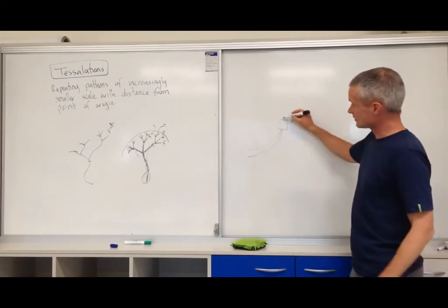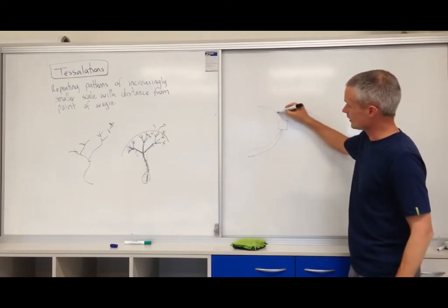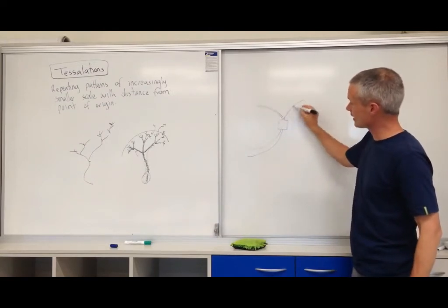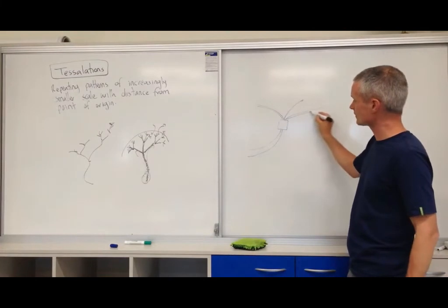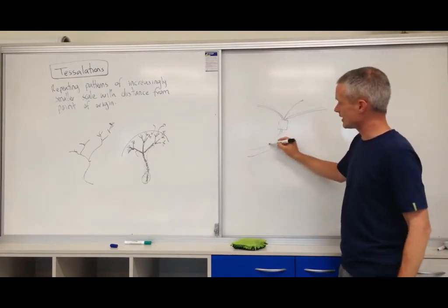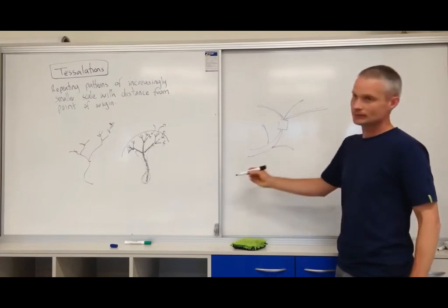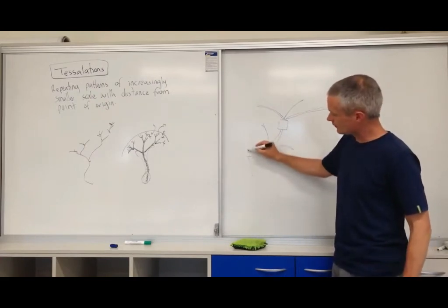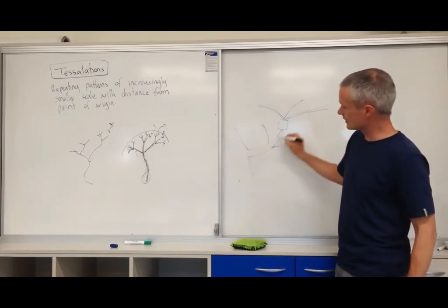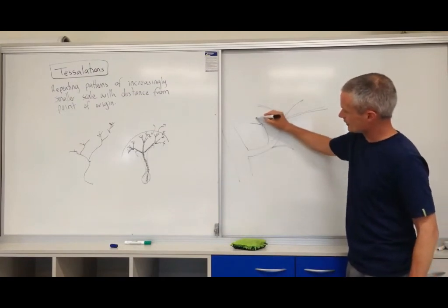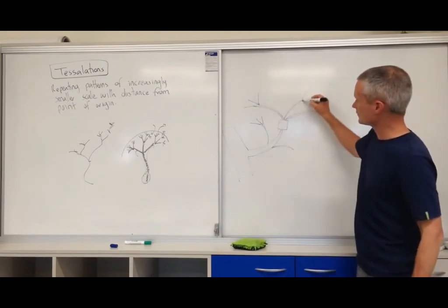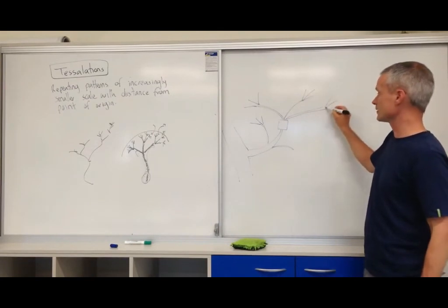you might create a tessellation pattern like this as a way of getting pathways to different parts of your property. So from the main arterial highway, from the main road into your property, it might then branch out into all of these pathways that allow you to access the different parts of your property.